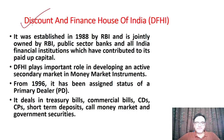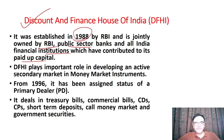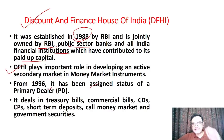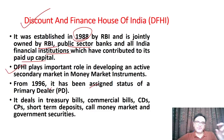The Discount and Finance House of India Limited (DFHI) was established in 1988 by RBI and is jointly owned by RBI, public sector banks, and all India financial institutions, which have contributed to its paid-up capital. DFHI is basically the primary dealer for all kinds of money market instruments in India, like treasury bills and commercial deposits. To issue commercial bills, you have to go to DFHI, get it issued in your name, and then sell it into the money market.